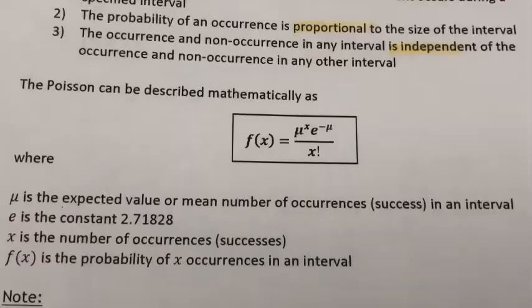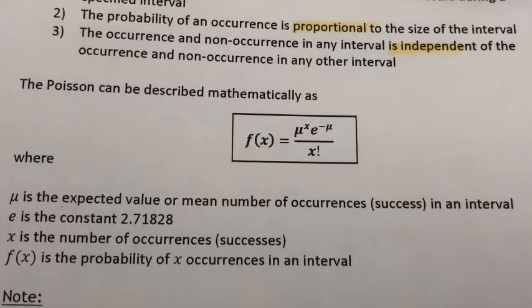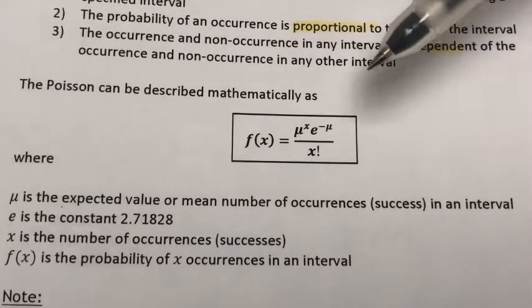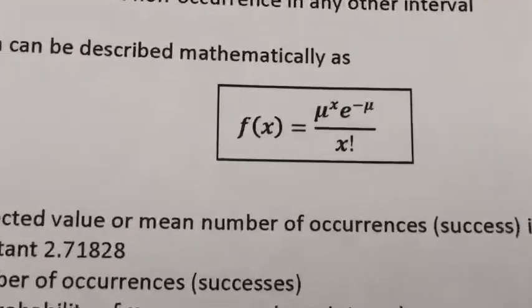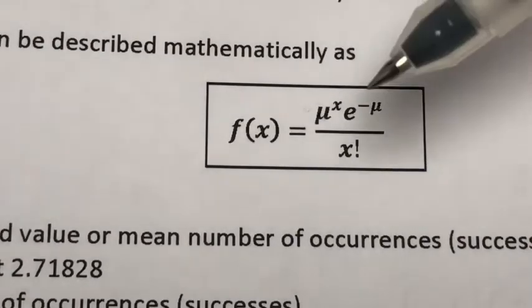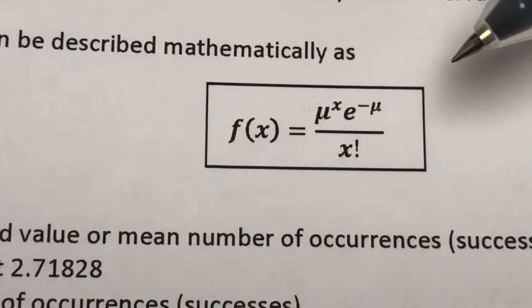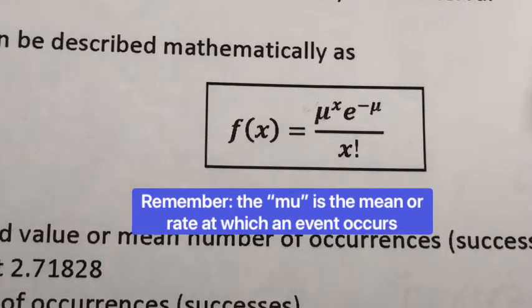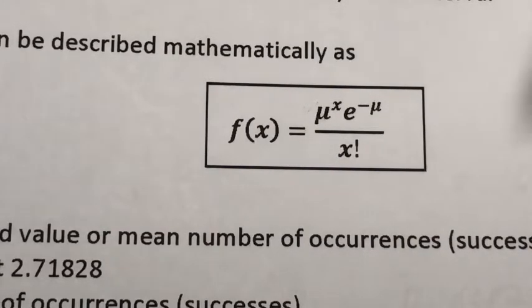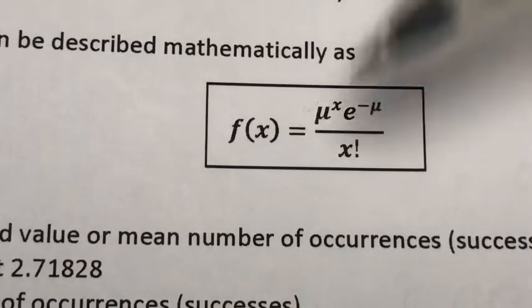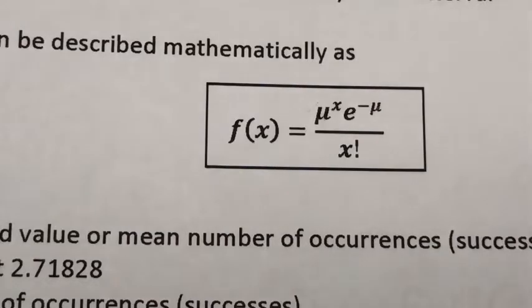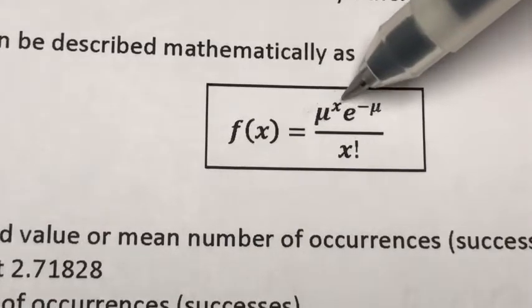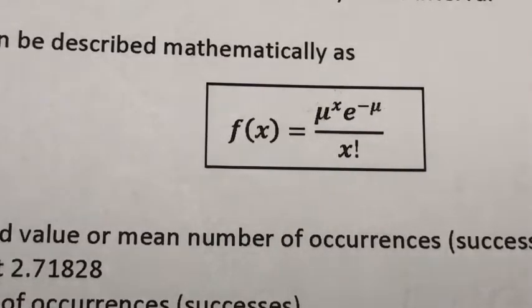There are two ways to find probabilities for the Poisson distribution. One is by using the formula. The formula uses mu — the rate at which an event occurs — which is typically given in the question. Once we have mu, we compute: P(X=x) = (mu^x × e^(−mu)) / x!, where x is the number of times the event occurs.